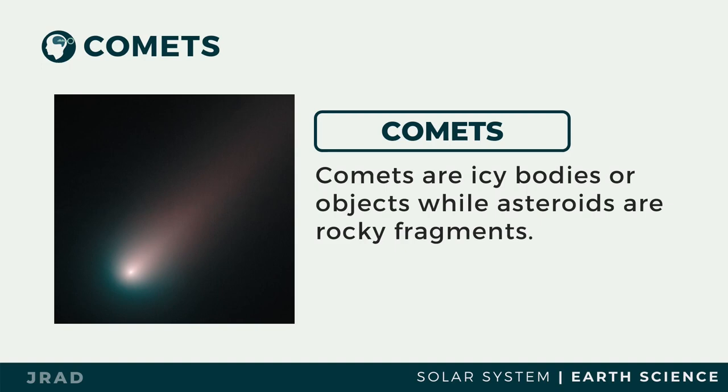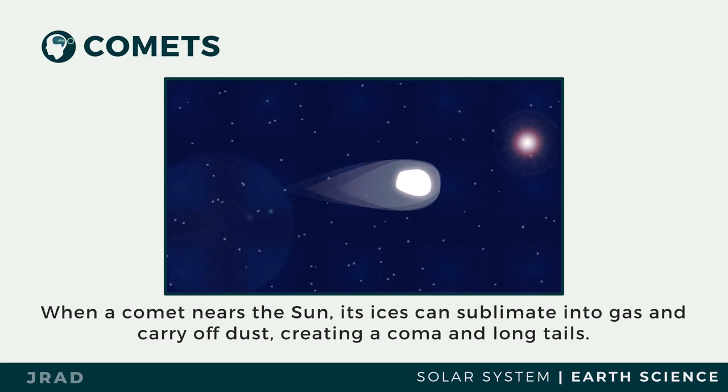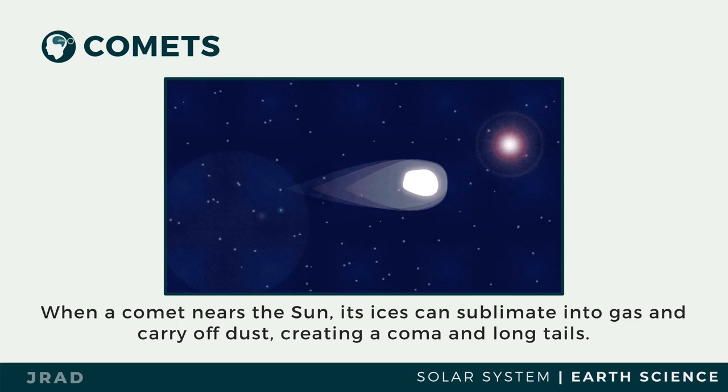A comet is an icy body that releases gas or dust. Scientists call them dirty snowballs because they are made up of frozen gases held together in rocky and metallic materials. Comets contain dust, ice, carbon dioxide, ammonia, and methane, among others. Just like asteroids, comets are also irregular in shape. When a comet nears the Sun, its ice turns into gas and carries off dust through the process of sublimation, which is the reason for its coma and long tails.